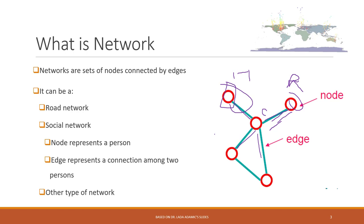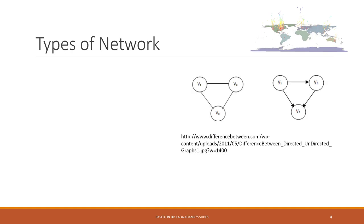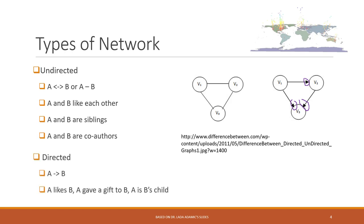There are normally two types of networks depending on the type of edges. Networks can be undirected networks or directed networks. For undirected networks, that means there's no direction in those relationships.